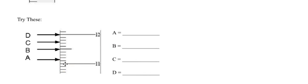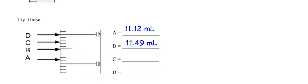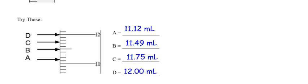It's between 11.1 and 11.2 — close to 11.1, so 11.12 is correct; 11.13 is also fine. Letter B is between 11.4 and 11.5 — just below 11.5, so 11.49; if you wrote 11.50 you're fine, but 11.5 is wrong because you need to go to the hundredths. Letter C is between 11.7 and 11.8, giving 11.75. Letter D looks like it's exactly on 12, so that's 12.00 milliliters — if it's on the 12, read it to the nearest hundredths.